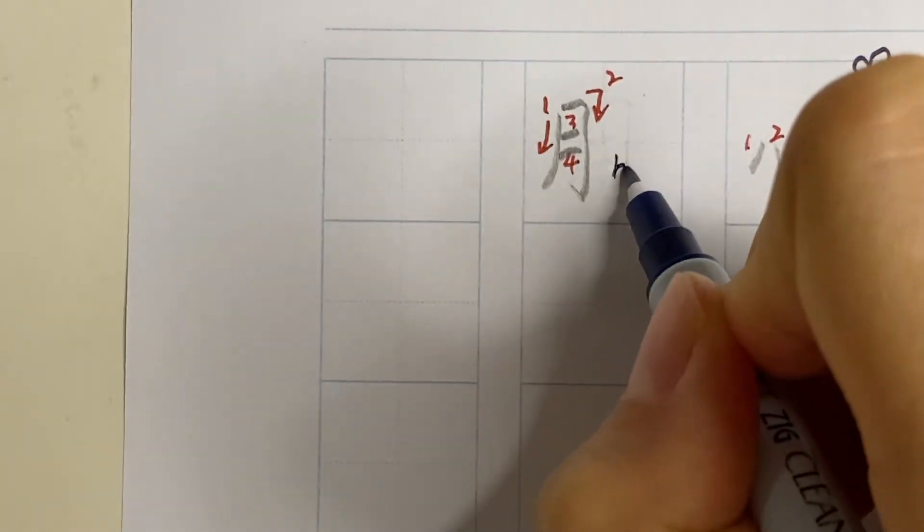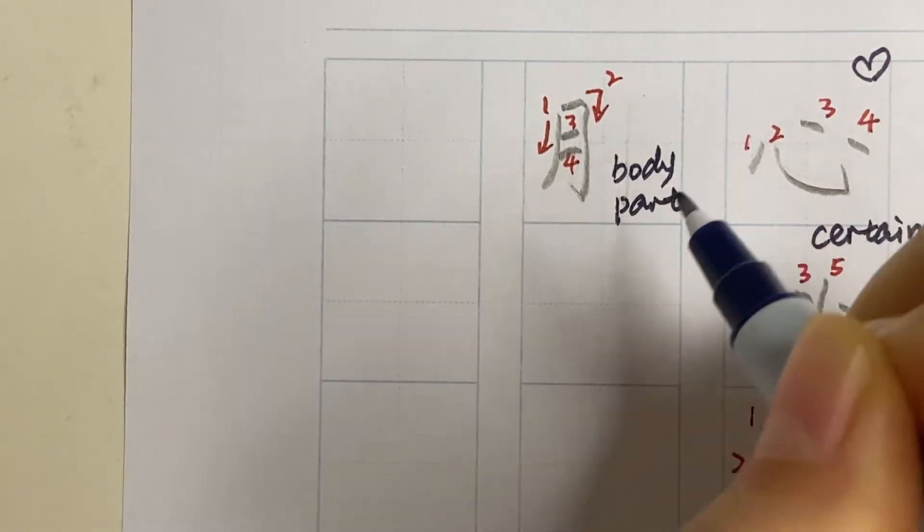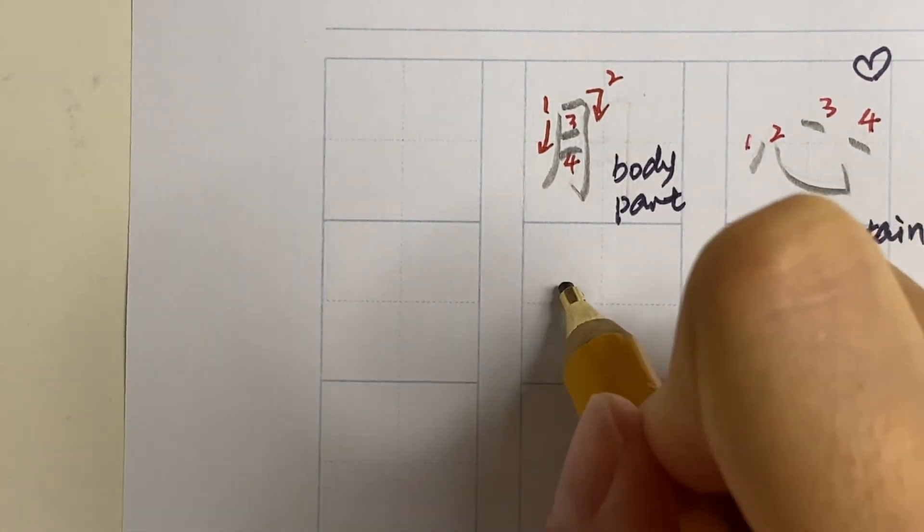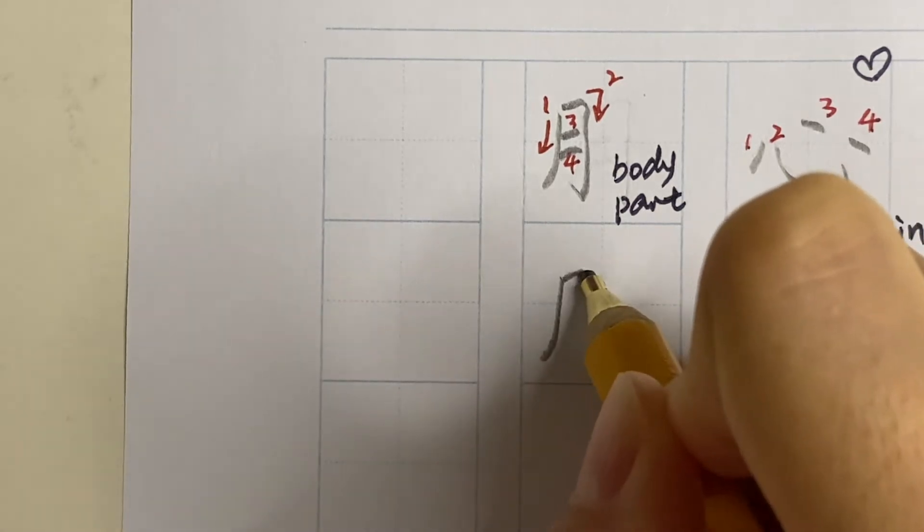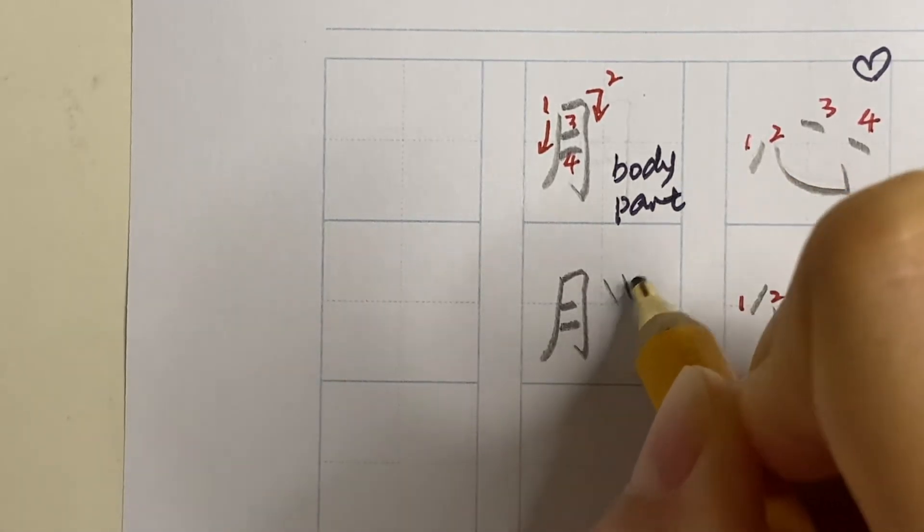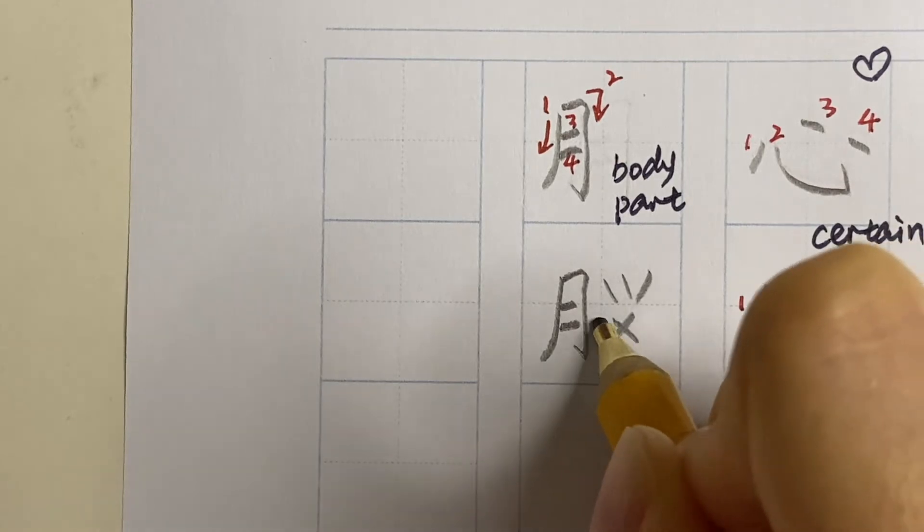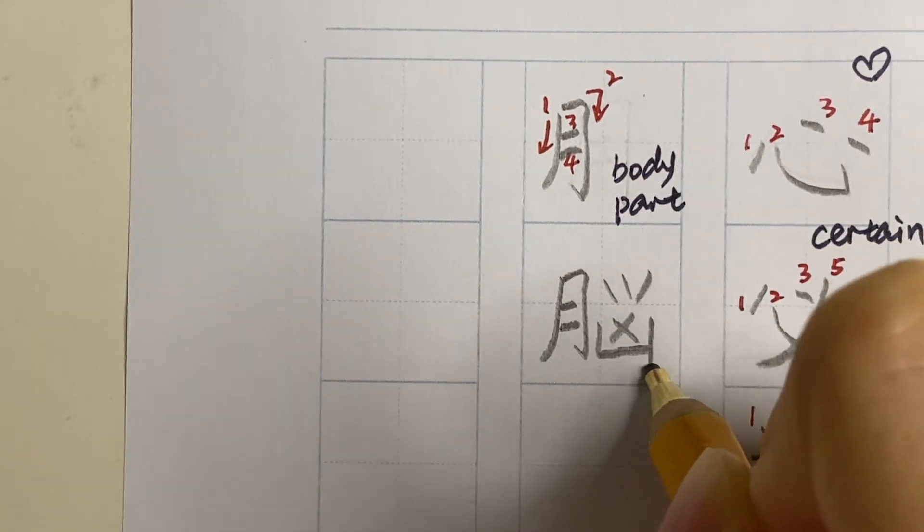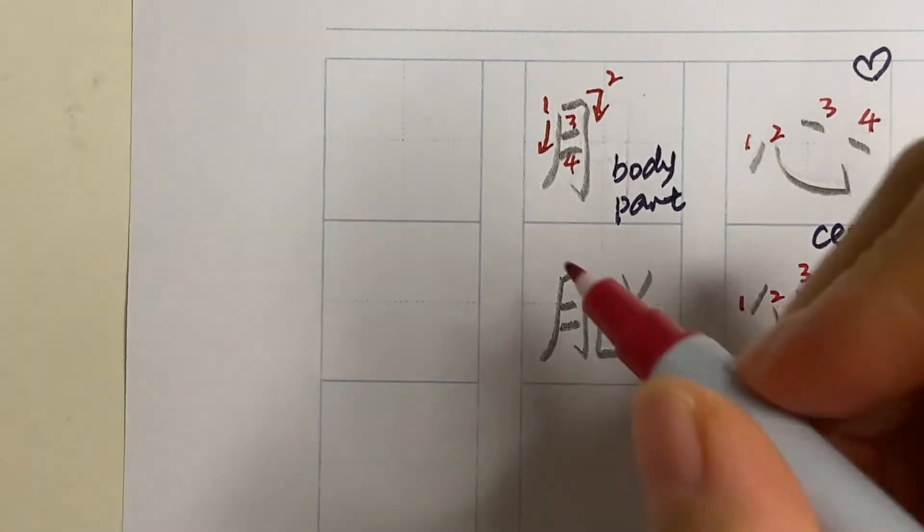And it's used as radical, it means the body part. When it's used as radical, it is again very slim and it's on the left. The right hand side we have three dots, a cross, and a half box. This actually is our brain, nou.